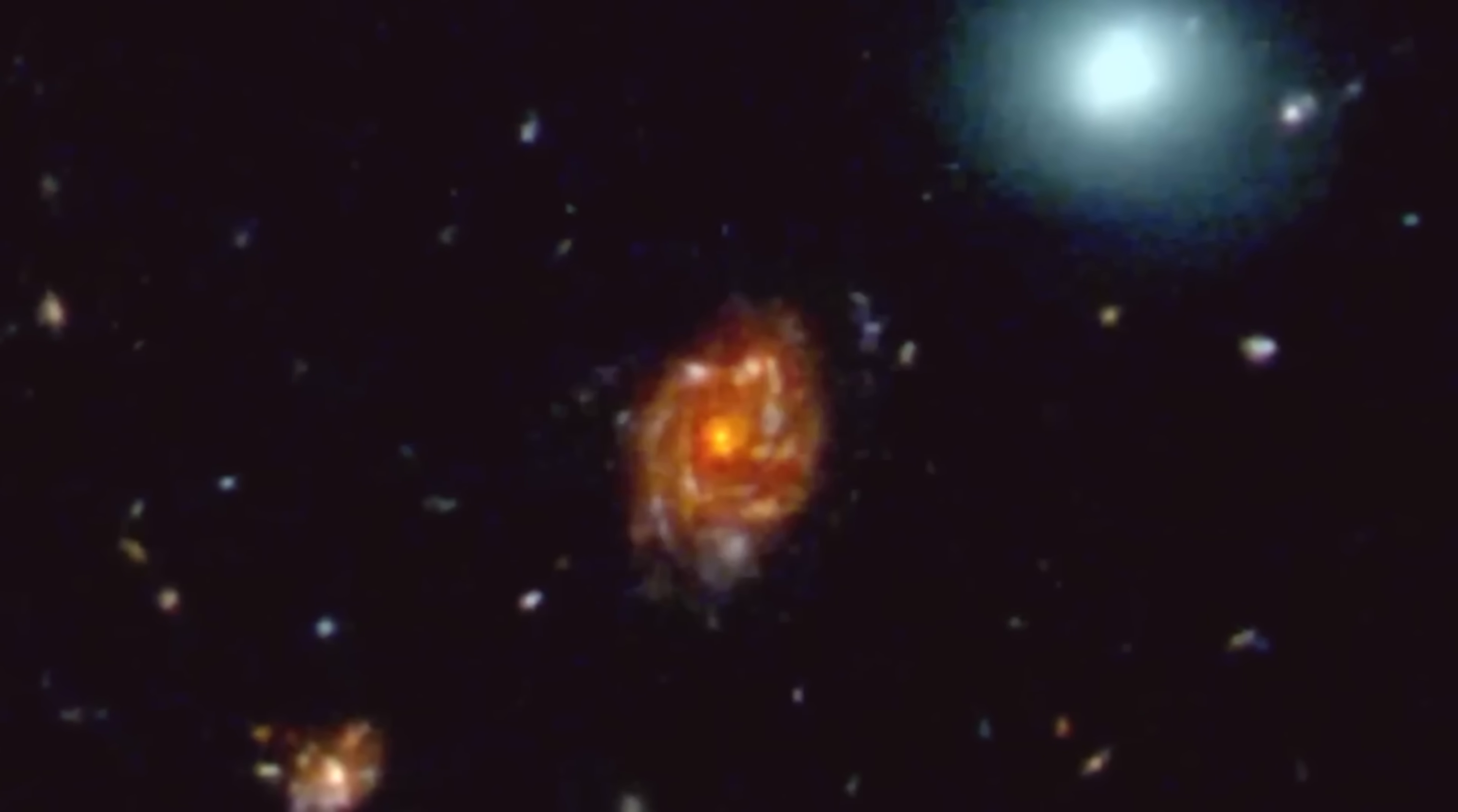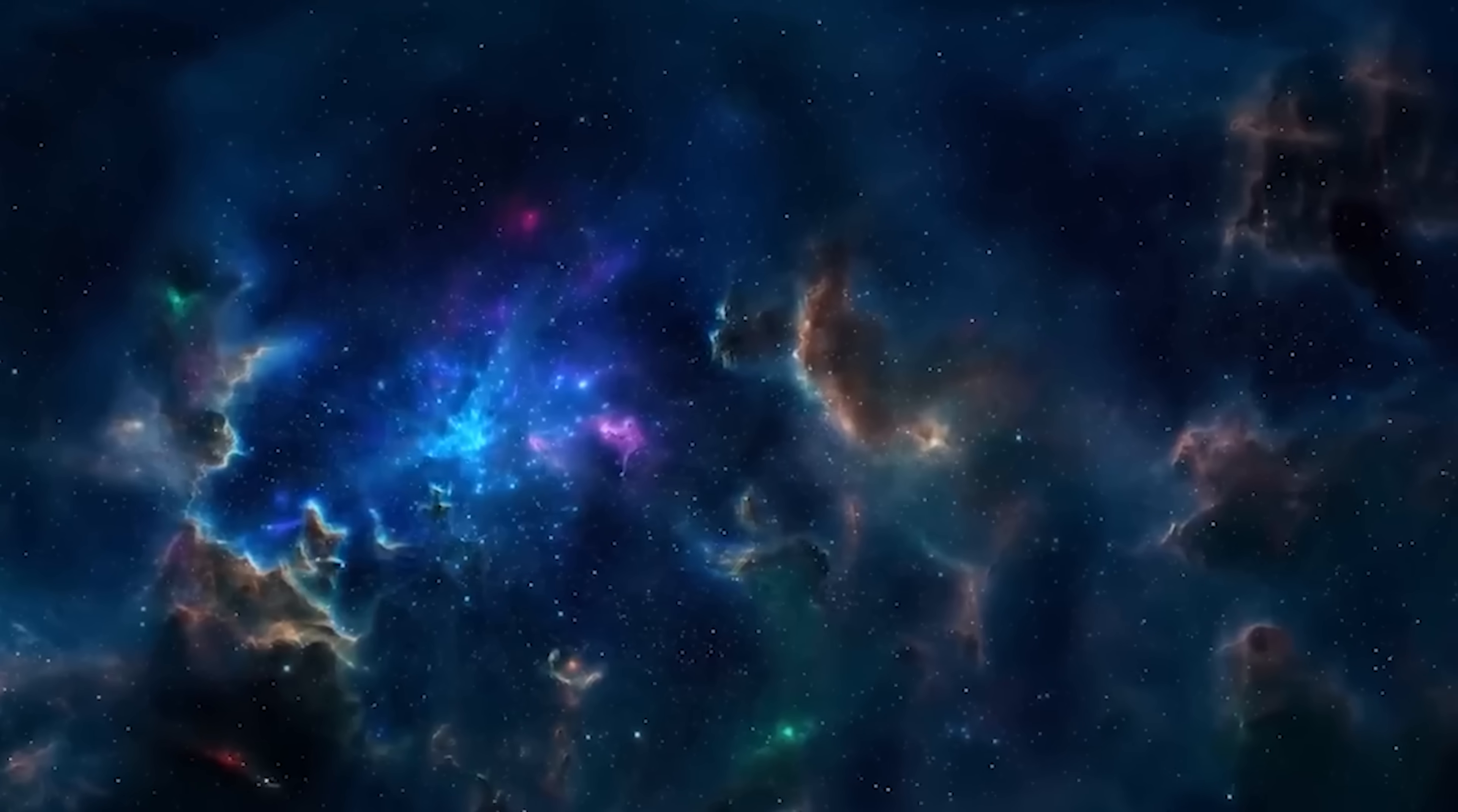Our models have always told us that in the early universe, galaxies were tiny, baby-sized compared to the grand spirals we see today. They were messy, clumpy, and still finding their shape. And that made perfect sense.